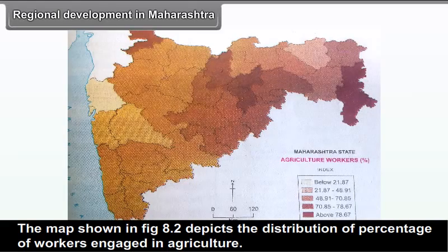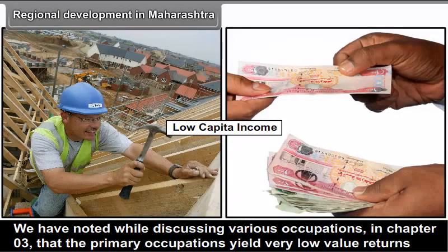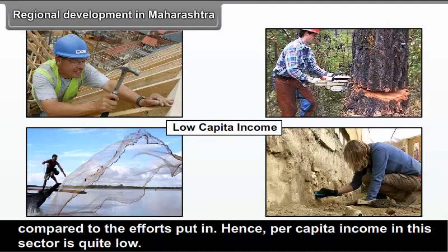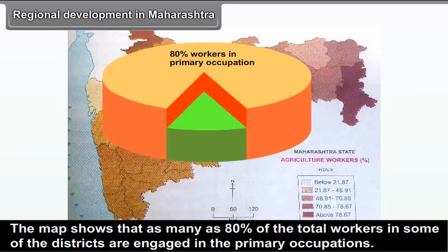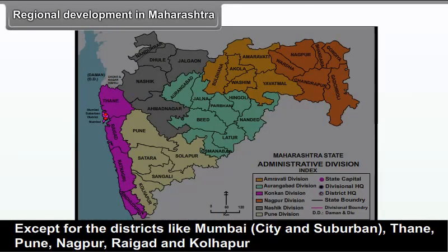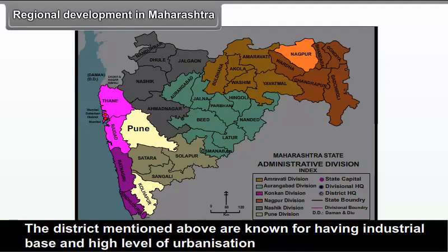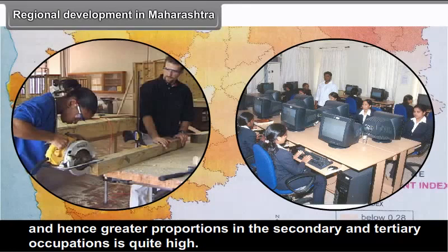The map in Figure 8.2 depicts the distribution of percentage of workers engaged in agriculture. Primary occupations yield very low value returns compared to efforts put in, so per capita income in this sector is quite low. In some districts, as many as 80% of total workers are engaged in primary occupations. Except for districts like Mumbai, Thane, Pune, Nagpur, Raigad and Kolhapur — which are known for industrial base and high urbanization — the percentage of workers in agriculture is quite high, over 60%.